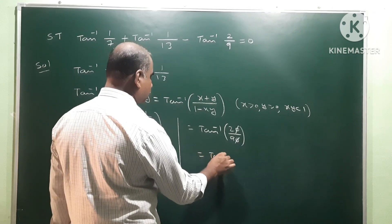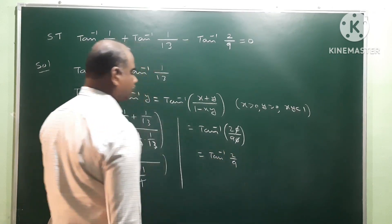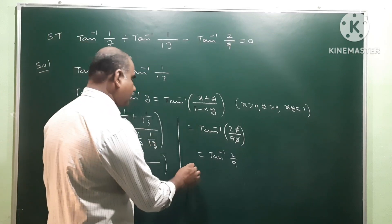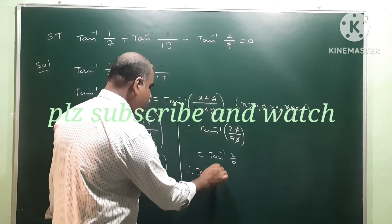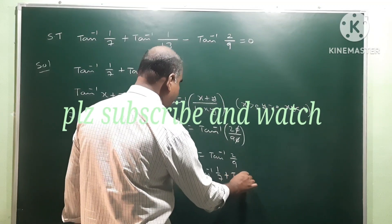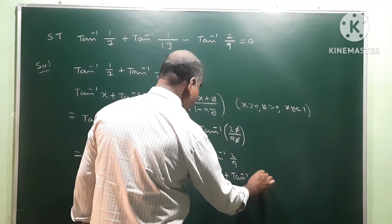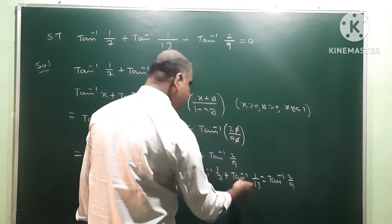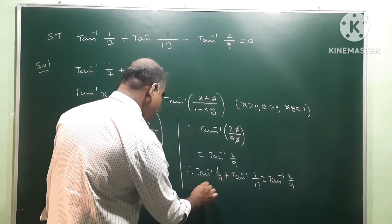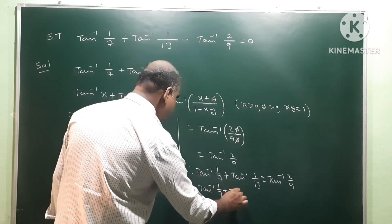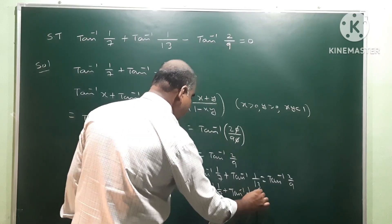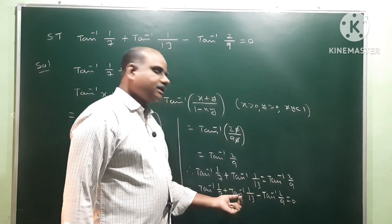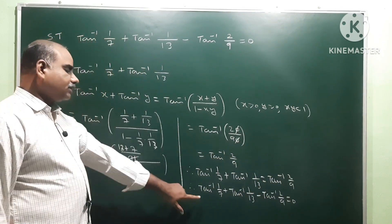The zeros cancel and we get tan inverse 2 by 9. So we get tan inverse 1 by 7 plus tan inverse 1 by 13 is equal to tan inverse 2 by 9. Therefore, tan inverse 1 by 7 plus tan inverse 1 by 13 minus tan inverse 2 by 9 is equal to 0. So this is our proof.